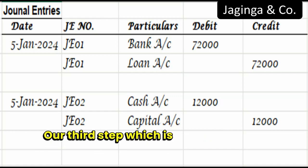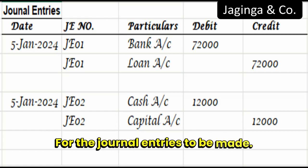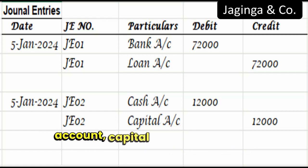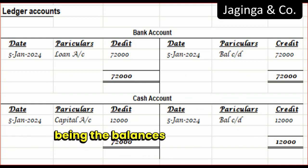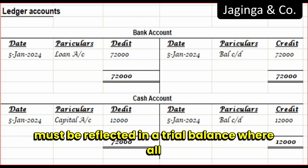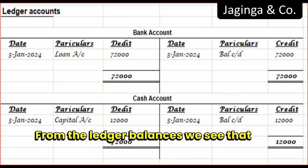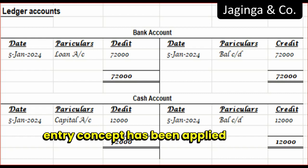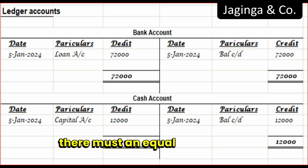Our third step, which is creating ledger accounts, follows. Here we will use four ledger accounts for the journal entries: bank account, cash account, capital account and loan account. The ledger accounts will be represented with the balances carried forward or carried down, being the balances in those ledger accounts. These balances at the end of the accounting period must be reflected in a trial balance, where all debit balances must equal all credit balances. From the ledger balances, we see that the double entry concept has been applied, where every transaction must affect at least two accounts, and for every debit there must be an equal credit entry.